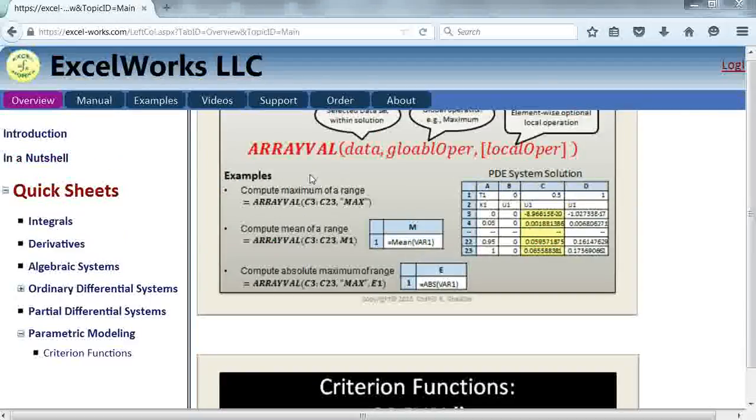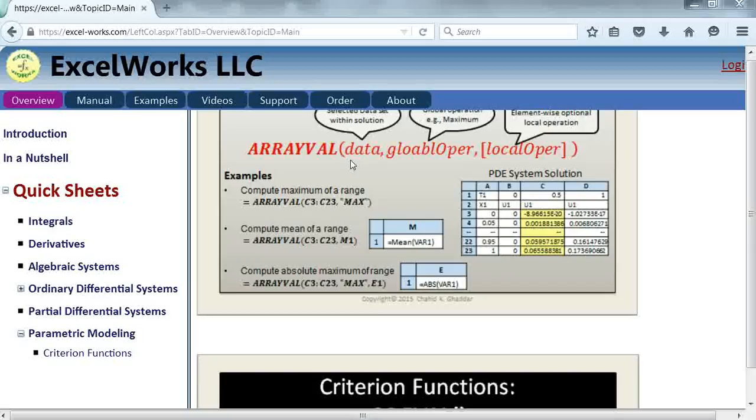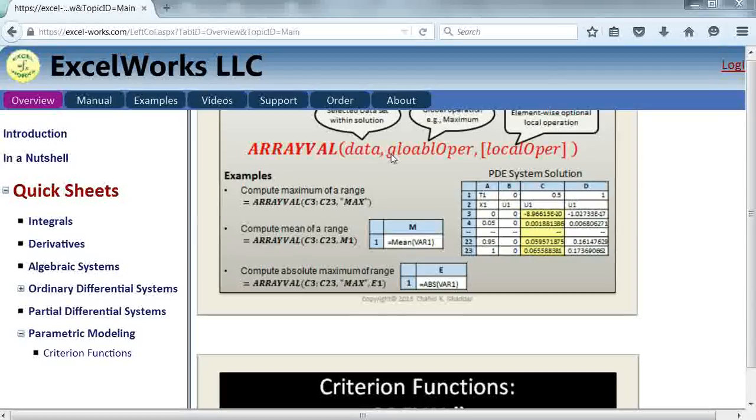The first criterion function is arrayval. It has the following interface. You select a set of data from your solution. It could be one number where you don't need any of the second two arguments, or it could be an array of numbers, and then you can manipulate the set to compute a single number. You can do this by specifying a local formula that applies to each element in the dataset, followed by applying a global operation that applies to the entire set.